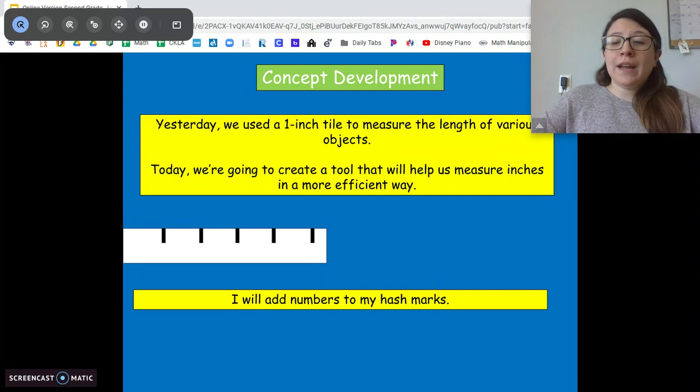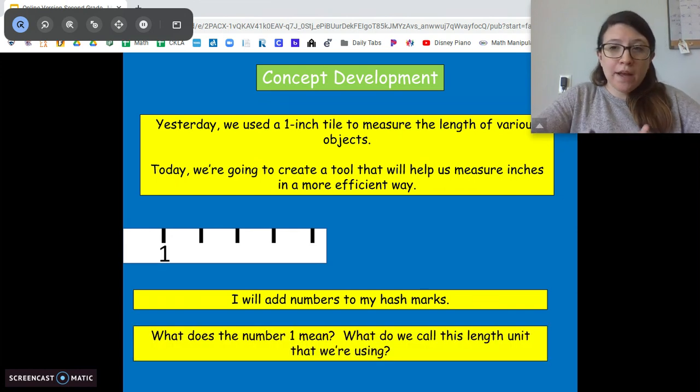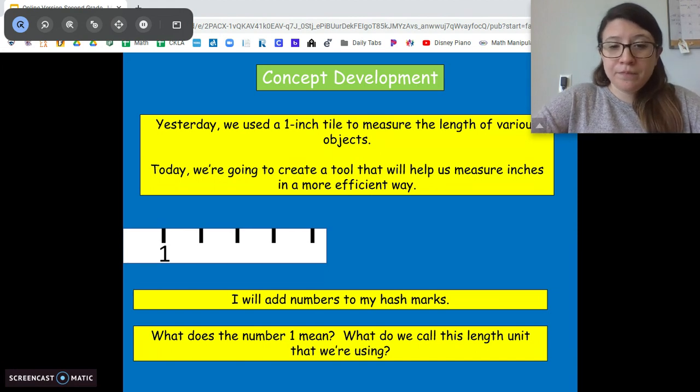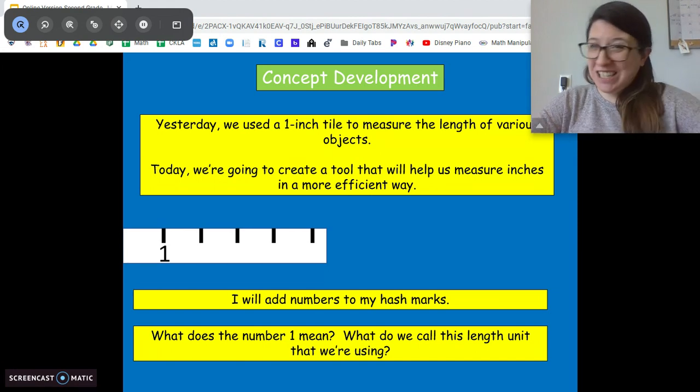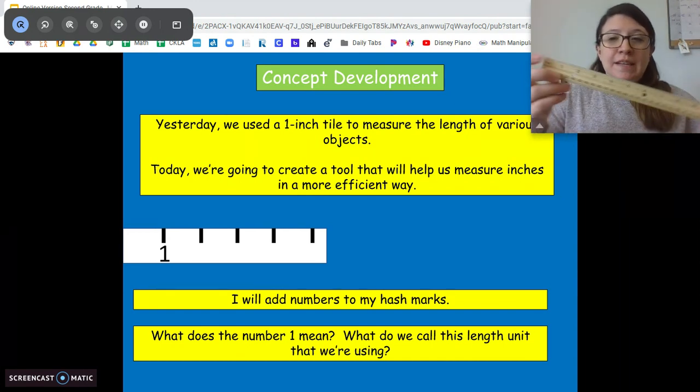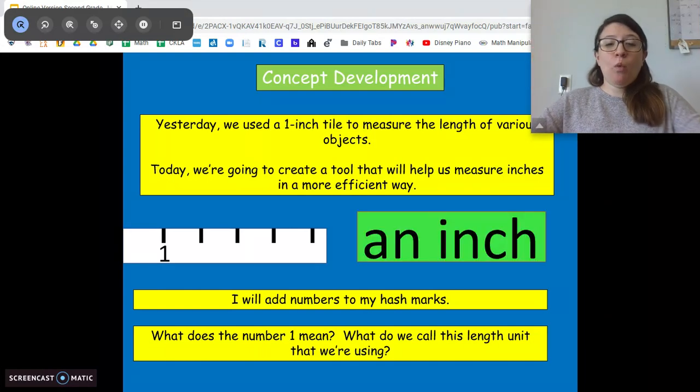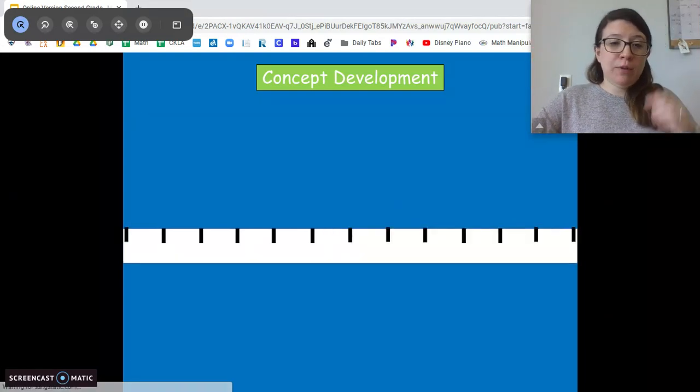So we're going to add numbers to our hash marks just like we did with centimeters. We're going to start with one and go from there. What does that one mean? Is it one monkey? One dollar? It's going to be one inch. Remember we're measuring in inches. That's going to be one inch. Then we can go from there.